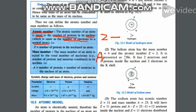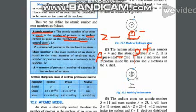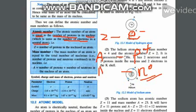This is known as electron — I'll write it in short form — and this is known as proton. To find the number of neutrons, we use A minus Z. A minus Z gives you the number of neutrons.